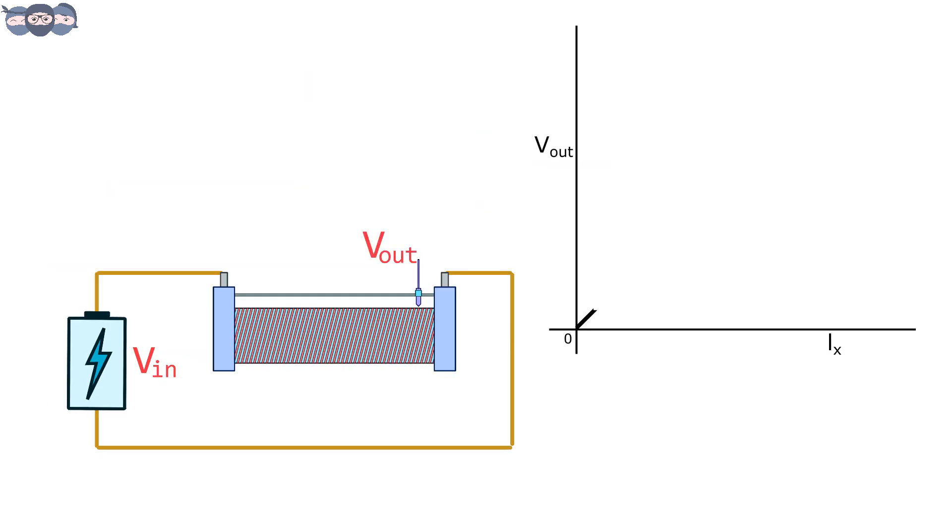The graph here shows the input-output characteristics of potentiometer for linear displacement measurement. As the distance increases, the output voltage also increases. So, one can easily find the length travelled from the corresponding output voltage.